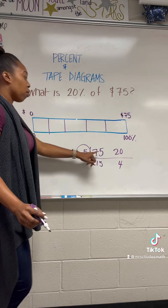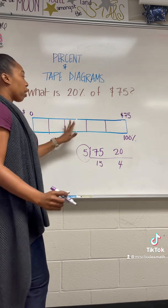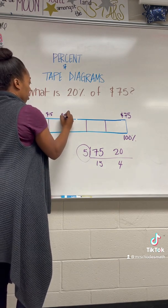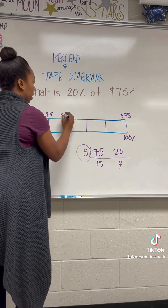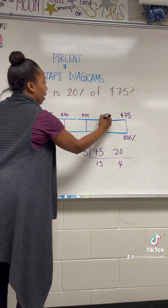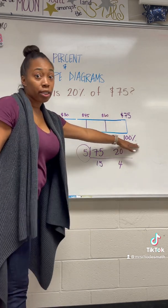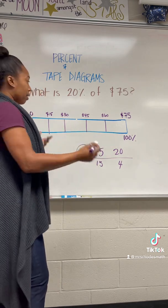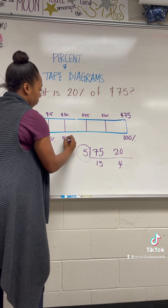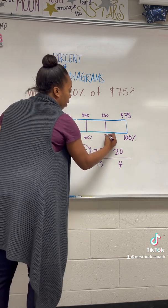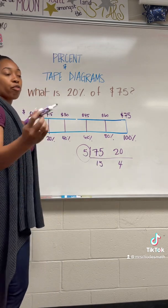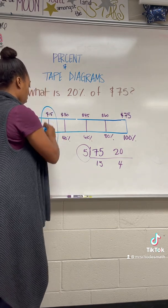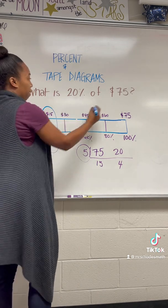Now you have to think about how you're splitting it up. 75 divided by 5 is 15, so every mark is $15. So this is 15, then 30 because you're increasing, then 45, and 60. I'm going to do the same thing on the percent side. 100 divided by 5 gives me 20%, so the marks go 20%, 40%, 60%, and 80%. We only wanted to solve for 20% of 75, so I just look for 20% and we find it here. So 20% of 75 is $15.